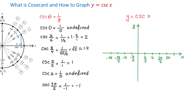At the points where the function is undefined, the graph will have vertical asymptotes. Considering the points we have here, the function will have vertical asymptotes at negative 2 pi, negative pi, 0, pi, 2 pi, and so on. Closer to these asymptotes, the function will approach either positive infinity or negative infinity.